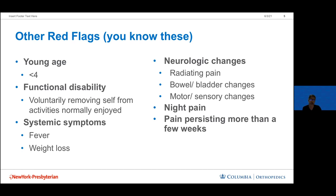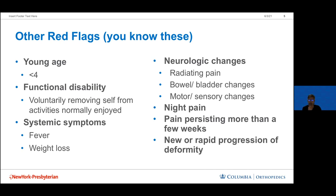A child complaining of pain persistently for a couple of weeks or months should probably be worked up. If they've been complaining for six or seven years, that's less alarming because if it were something bad it almost certainly would have declared itself. But within that time frame you need to take next steps. Finally, new or rapid progression of any structural change in spinal alignment is a red flag — if someone comes in with back pain and has developed scoliosis that wasn't there a couple months ago, that definitely needs workup.